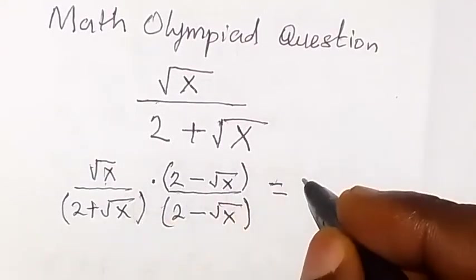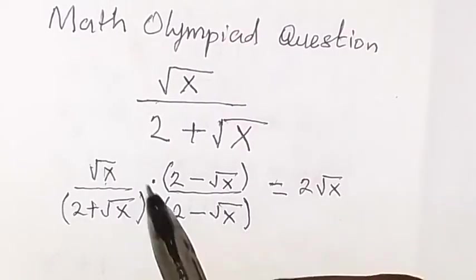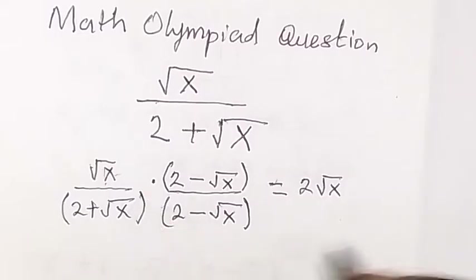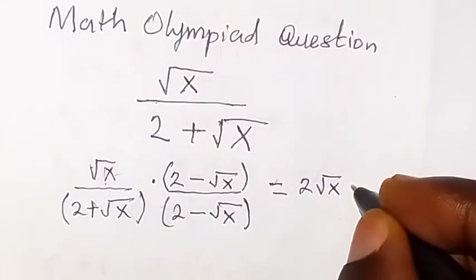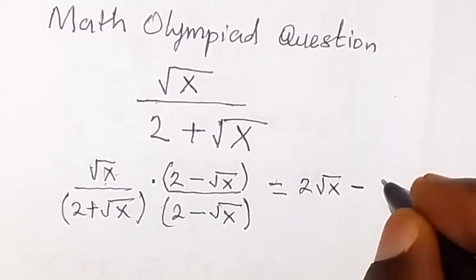root x multiplied by 2 minus root x. Then root x times root x here, that's root x squared. Also that will be x. So that's just x.